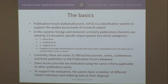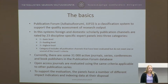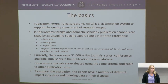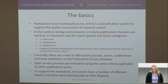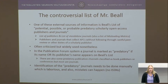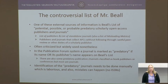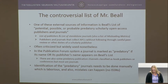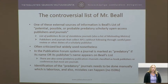To support the evaluation, the expert panels have a number of impact indicators and indexing data at their disposal, like indexing data from Web of Science, Scopus, Erichplus, and some others like Directory of Open Access Journals, Sherpa Romeo. One of these is Beale's list — described as a list of potential, possible or probable predatory scholarly open access publishers and journals. The person behind Beale's list is Jeffrey Beale, an academic librarian at the University of Colorado Denver.